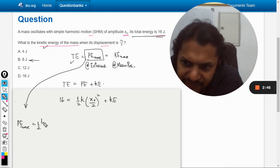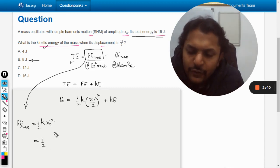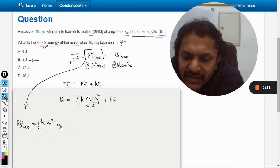So what is the potential energy? This is half k x_naught square, so it is half k x_naught square, and it is given as 16 joules.